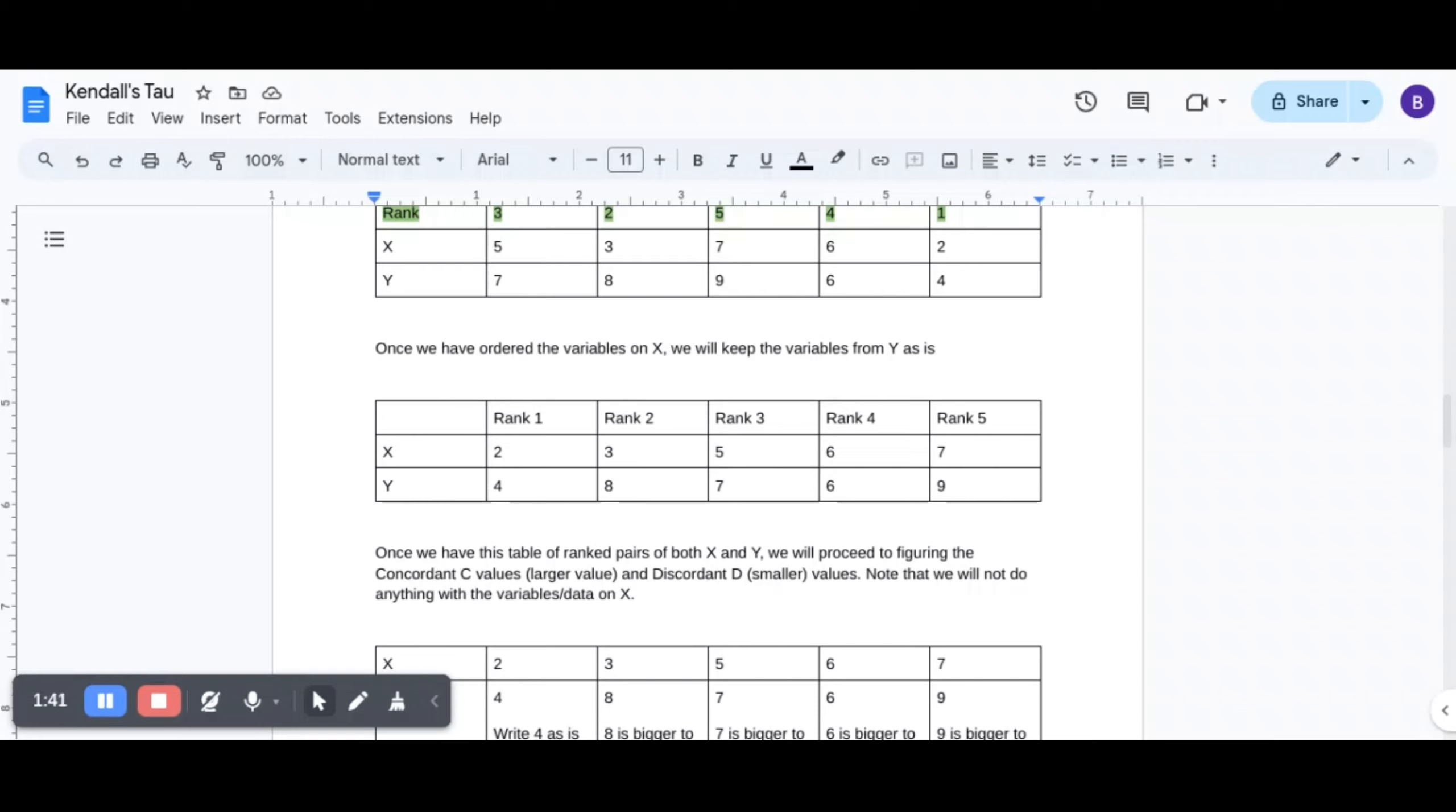How? So here you can see that when I ranked 2 as 1, the corresponding value on Y was 4. So 2 and 4, okay? I keep 2 and 4.